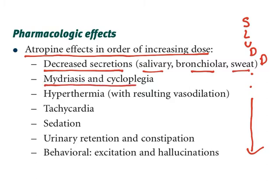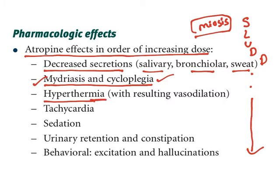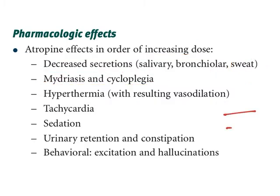The next effect is mydriasis and cycloplegia. Acetylcholine causes miosis — pupil constriction — so anti-cholinergic has the opposite action: mydriasis and cycloplegia. Atropine also causes hyperthermia because sweat secretion is reduced. Sweat is one of the major mechanisms of thermal regulation. Without sweat, body temperature increases, resulting in vasodilation. Vasodilation also helps control body temperature — when blood vessels are dilated, more surface area is available for blood to lose heat.